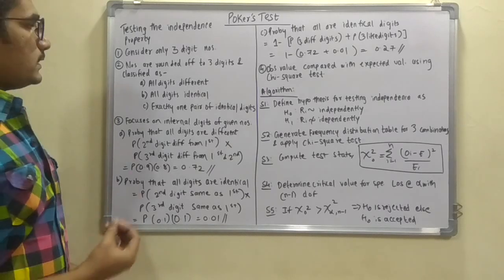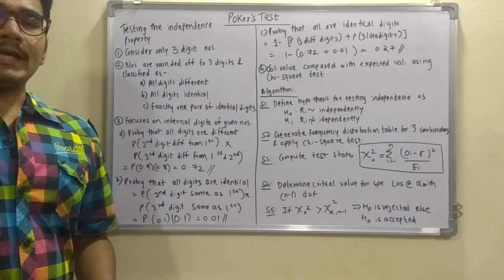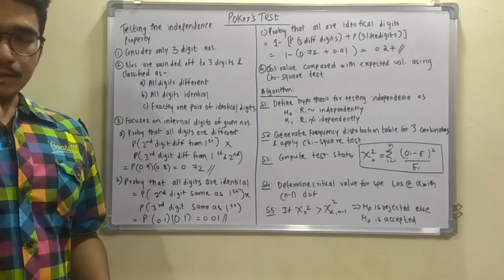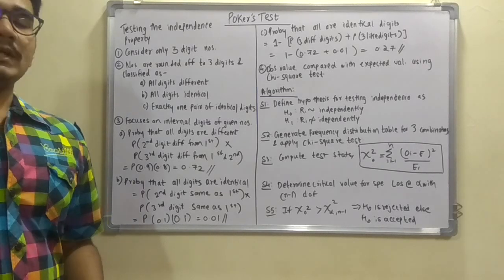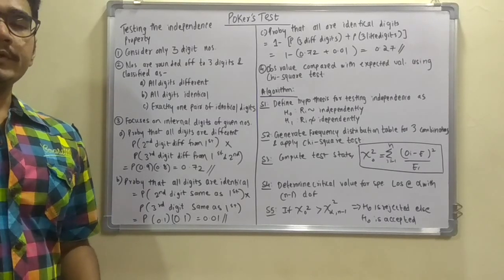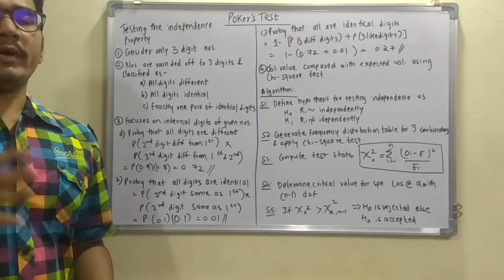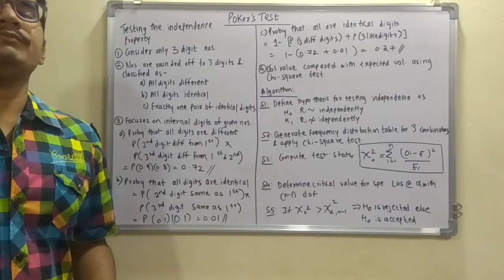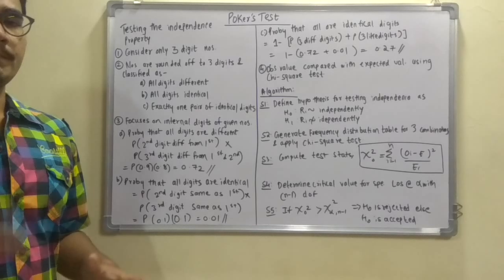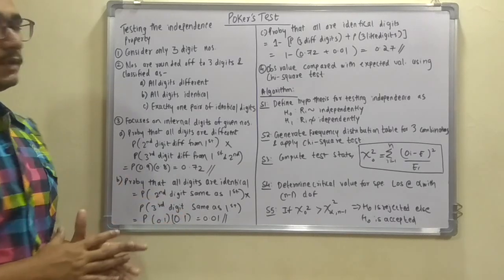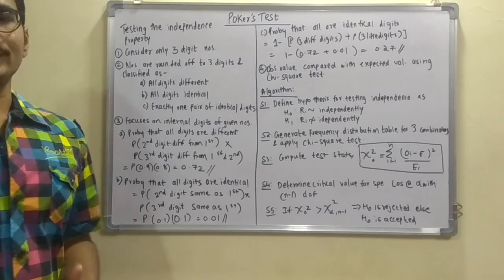Now this Poker's Test will consider some digits. It will not consider the number as a whole, but instead it will consider the individual digits and that too only three-digit numbers. If those numbers are not three digits then it will round it off to three digits. So if it is in decimal manner like 0.597, then it will multiply itself with 1000 and round it off to three digits. It is good advice that you use only three-digit numbers for solving this Poker's Test.